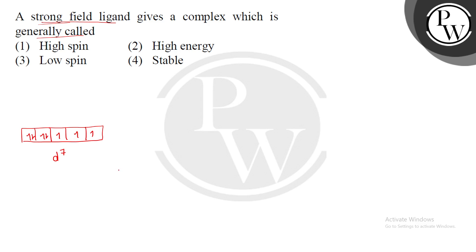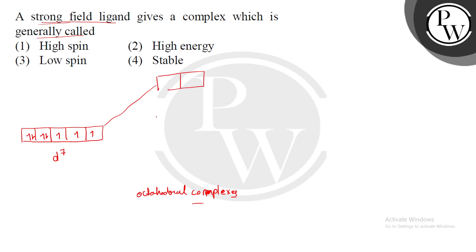Now, if a ligand approaches the metal ion, the orbitals and the metal ion experience repulsion. Because of that repulsion, the energy of those orbitals will increase. In an octahedral field, in octahedral complexes, two orbitals' energy will increase and three orbitals' energy will decrease. The three orbitals with the same energy are called T2G, and the two orbitals are called EG.